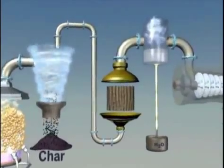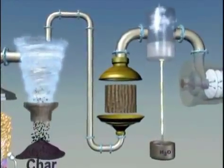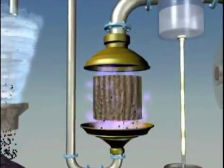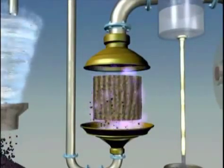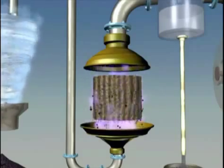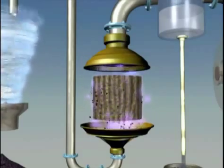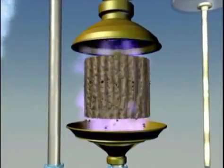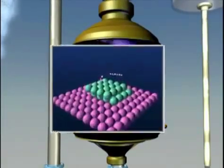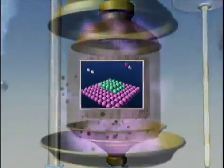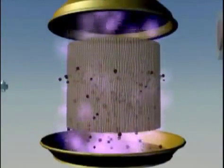Tars and methane are also produced. Their quantity and composition depend on the gasification environment. Tars are high molecular weight organic compounds. If they are not removed, these tars will contaminate downstream equipment and inhibit fuel synthesis. One way to remove methane and tars is by using special catalysts to convert the compounds into additional syngas, thus eliminating the methane and tar problem while also improving the efficiency of the process.